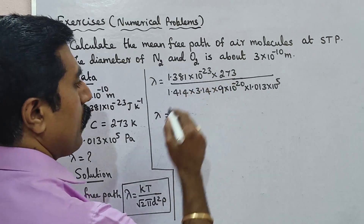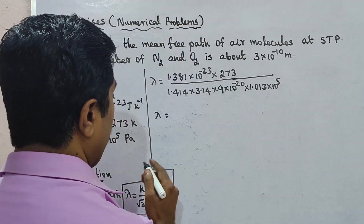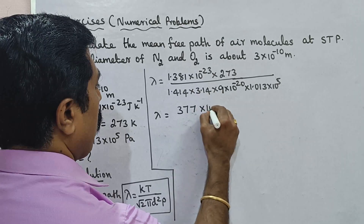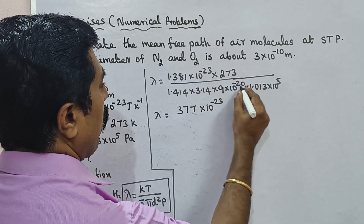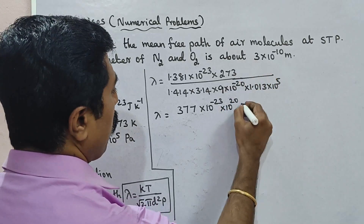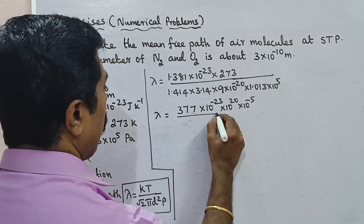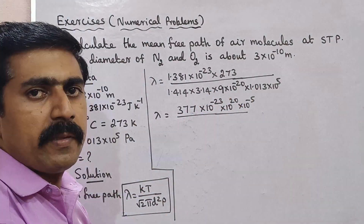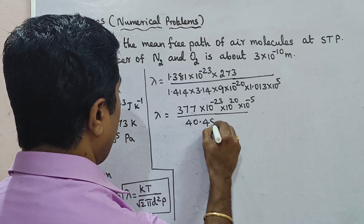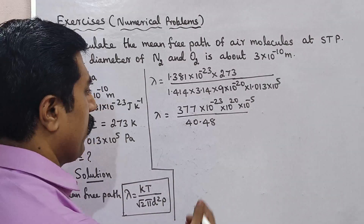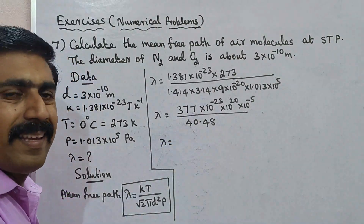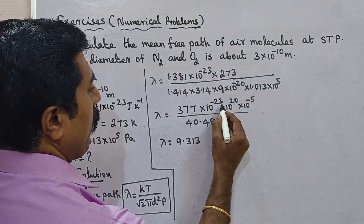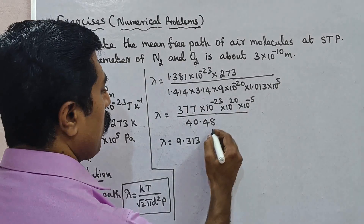Computing the expression: the numerator involves 1.381 × 273, and the denominator involves 1.013 × 10⁵. Working through the powers of 10: we have 10⁻²³ in the numerator, 10⁻²⁰ from D squared, giving combined powers. The exponent comes out to 10⁻²⁸ in the denominator terms.